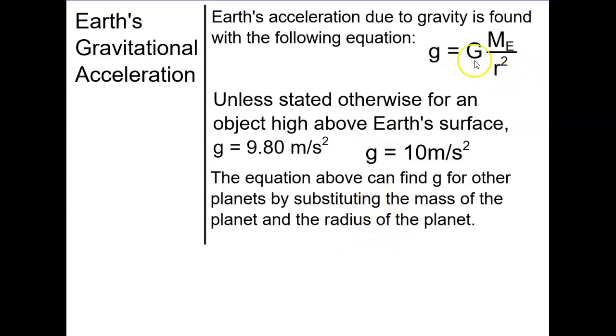However, you can use this exact same equation to find the g for other planets, the little g for other planets, by substituting the mass of the planet and the radius of the planet. So if you wanted to find the gravitational acceleration for the planet Jupiter, you would just need to know the mass of the planet and then divide that by the radius of the planet squared, and you would be able to multiply by big G, and then you would be able to find the acceleration due to gravity because of that.